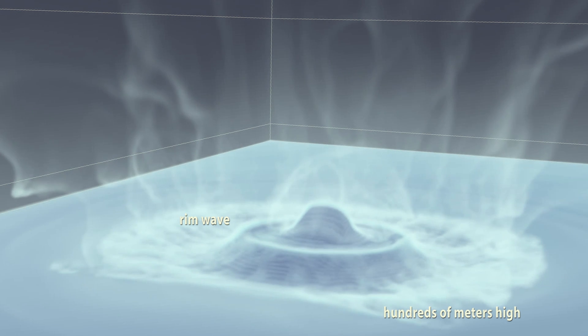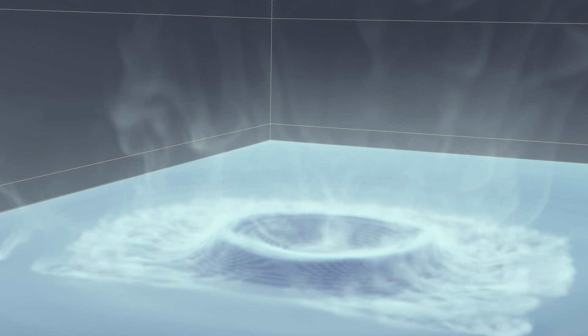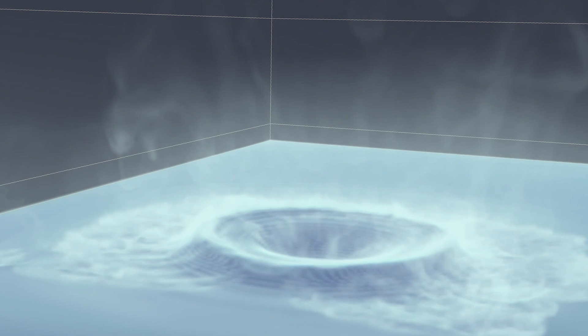A new water jet begins to form, which will in turn create a new rim wave, a process that continues for some time. Each of these rim waves has the potential to become a tsunami.